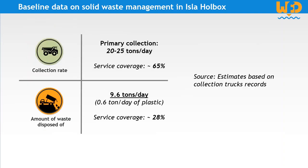Finally, the quantities of waste collected, transported and disposed of at the final disposal site were estimated based on collection records and estimates of the truckloads based on their volumes. This was the preferred option as no weighing system was available, neither at the transfer station nor at the landfill. Using this data, we obtained two very different collection rates for primary and secondary collection. The primary collection rate within the island is about 65%. However, only a limited fraction of this waste is transported to the landfill, and more than half remains stockpiled at the transfer station on the island. The secondary collection rate from the island to the landfill is only 28%.